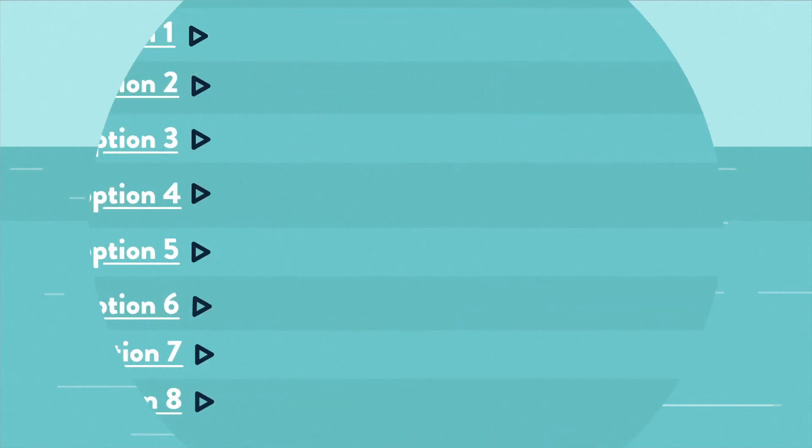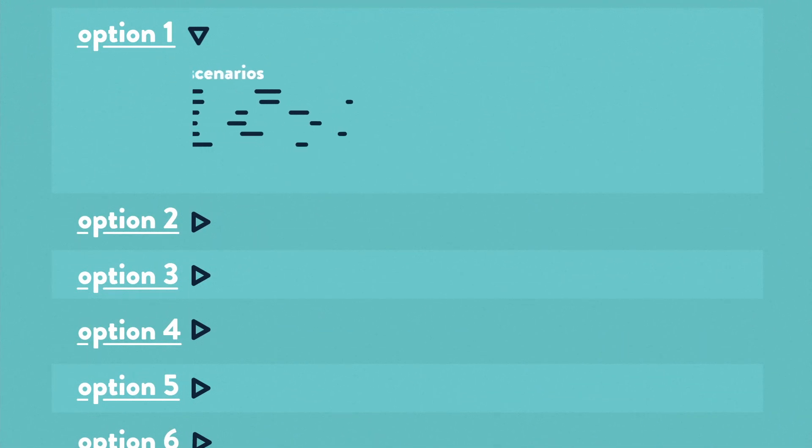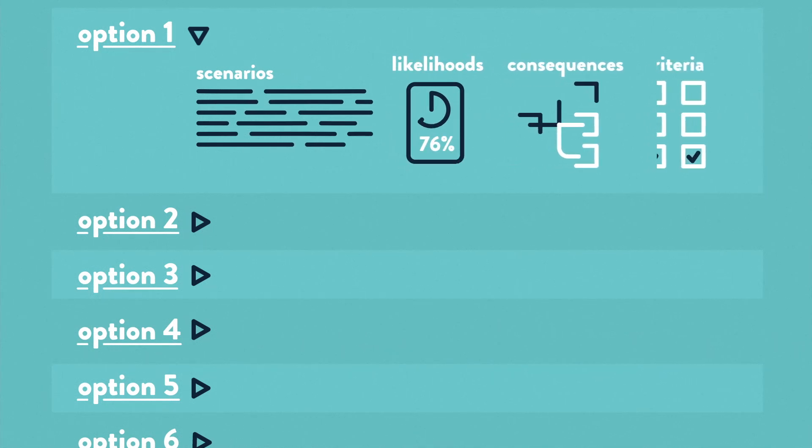In the third phase, different management options will be evaluated. This results in scenarios, likelihoods and consequences, and acceptance criteria for mitigating measures.